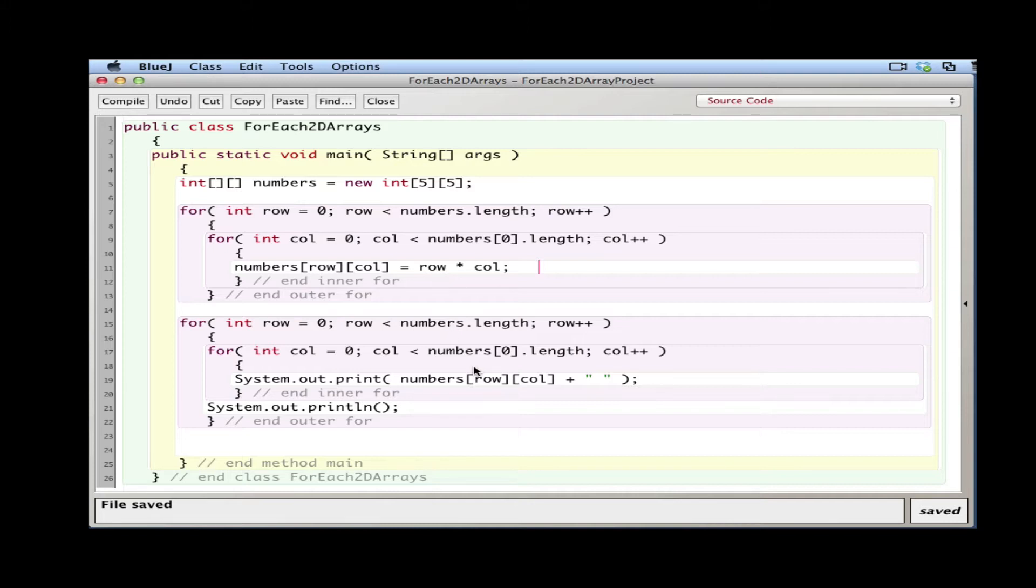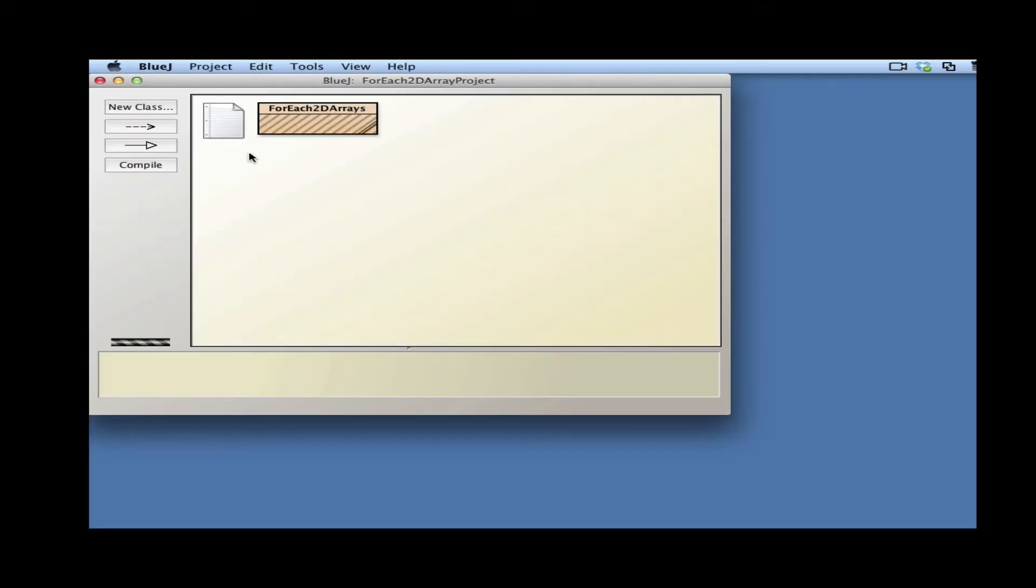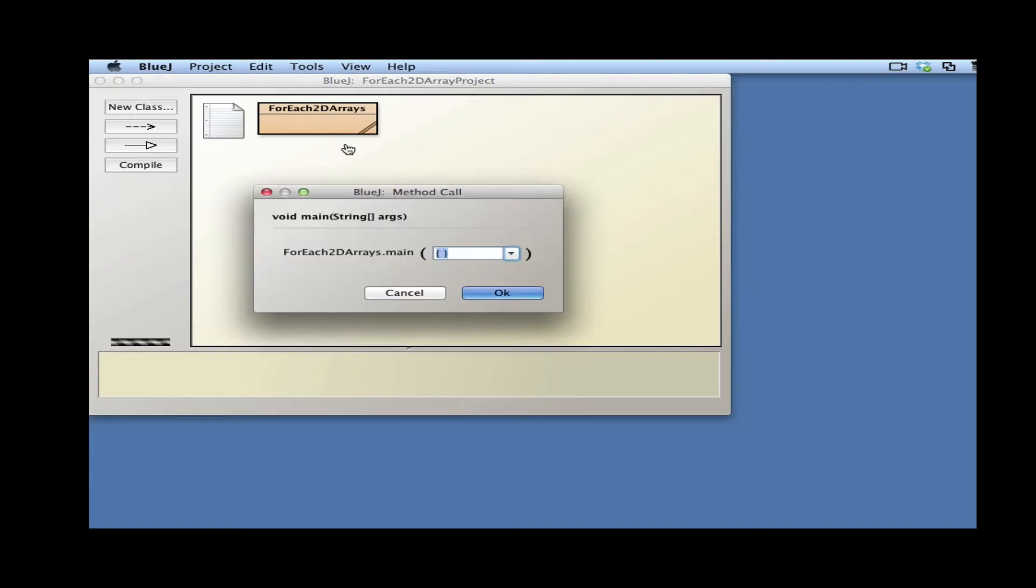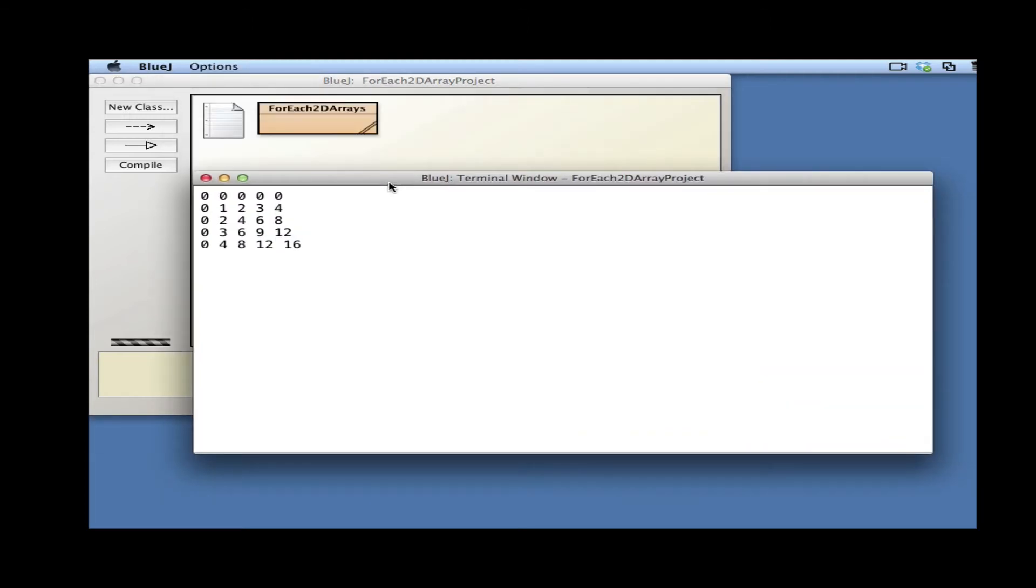This is our basic nested for loop structure. I'll run the program so you can see it. Compile it and when you run it, you can see I get a 2D array printout of the contents of the array.